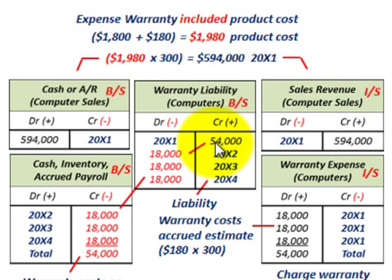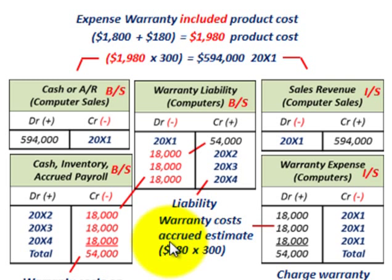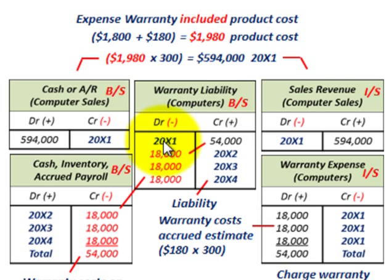We also need to set up a warranty liability. Using $180 per unit times 300 computers, we establish a warranty liability of $54,000 on the balance sheet at the time of sale in 20x1. This represents the warranty costs that will need to be incurred going forward.